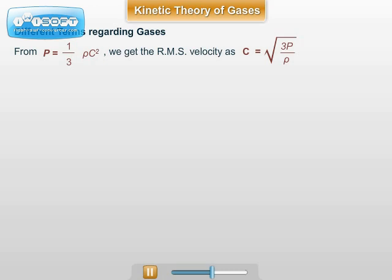If P is the pressure, rho is the density of the gas, and C is the RMS velocity of the gas molecules, pressure exerted by the gas is given by the formula P = (1/3) ρ C². From this formula, the RMS velocity can be calculated as C = √(3P / ρ).